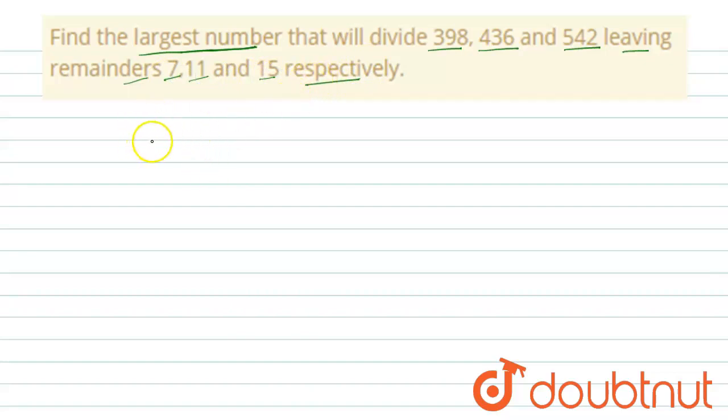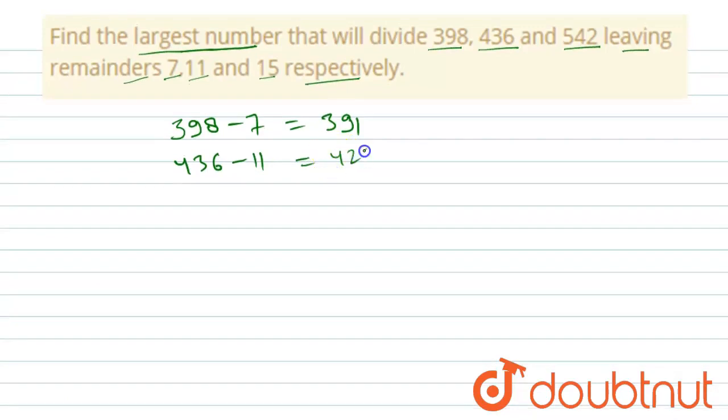If we subtract the remainder from the following given numbers: 398 minus 7 equals 391, similarly 436 minus 11 equals 425, and 542 minus 15 equals 527.